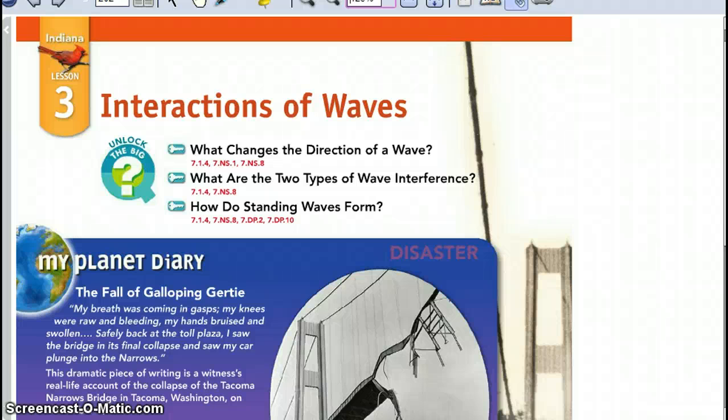Chapter 6, Section 3, Interactions of Waves. The three main questions that you need to answer by the end of this section. What changes the direction of a wave? What are the two types of wave interferences? And how do standing waves form?